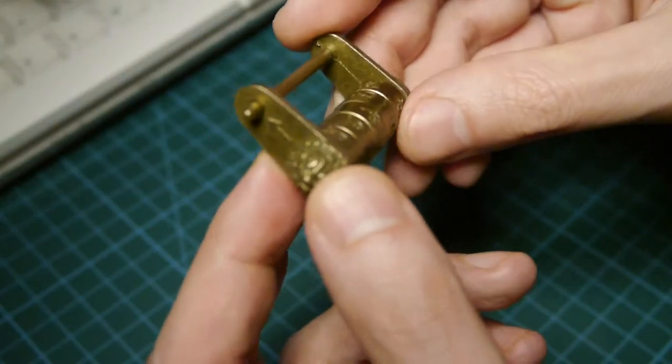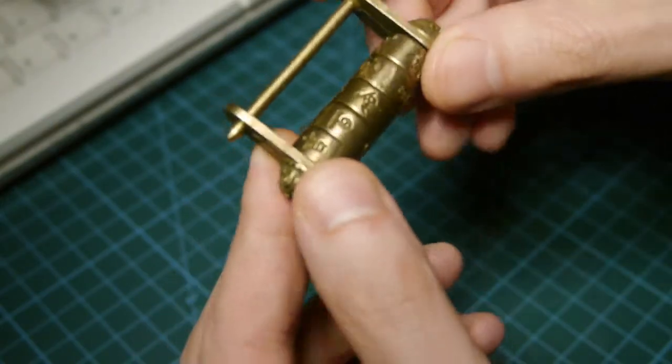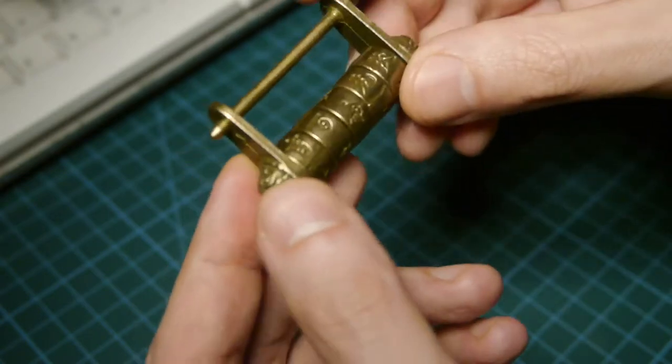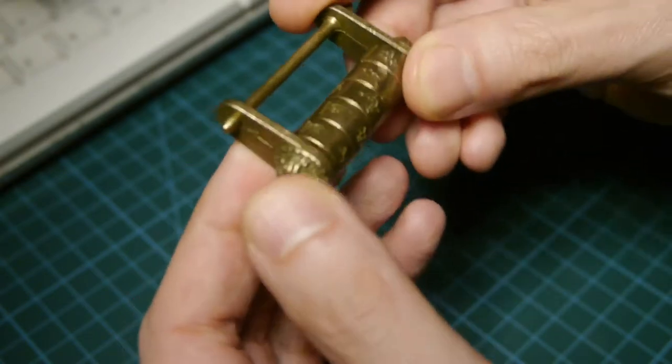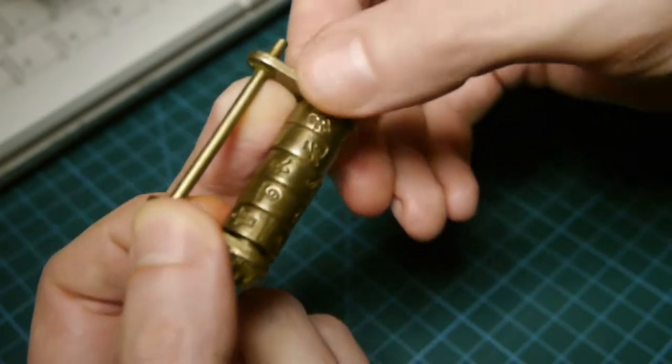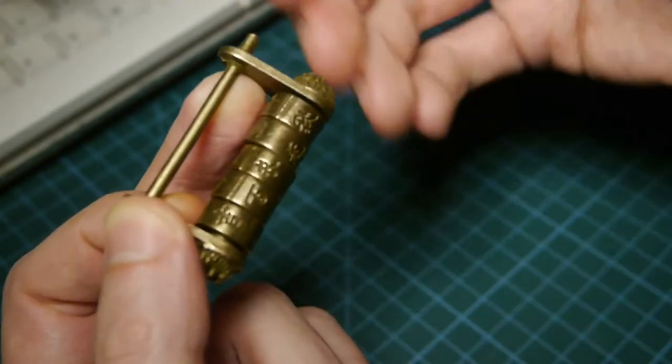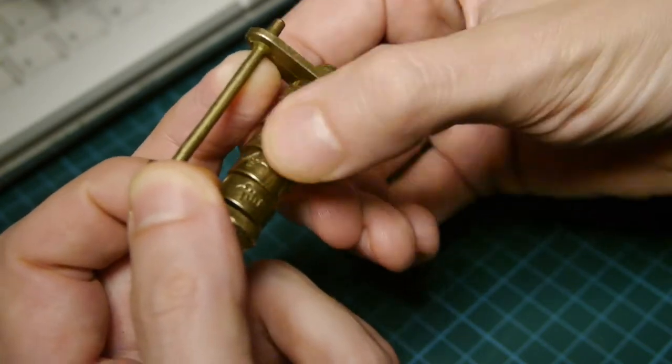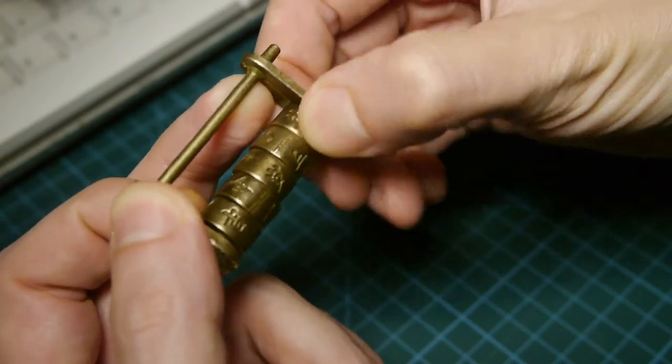But anyway, let's see how easy it is to decode this. The traditional way or the classic way to decode a combination lock is to tension it and then turn the wheels and find the most binding wheel first. If we do that with this kind of lock, we can feel that it's the rightmost wheel that binds the most.